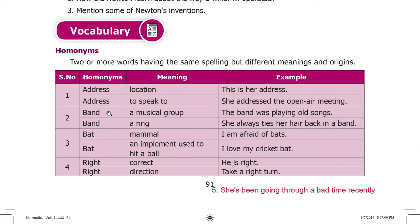Examples of homophones. First: 'address'. The first meaning of address is a location — 'This is her address.' The second meaning of address is to speak to someone — 'She addressed the open air meeting.' Both are spelled the same but have different meanings.